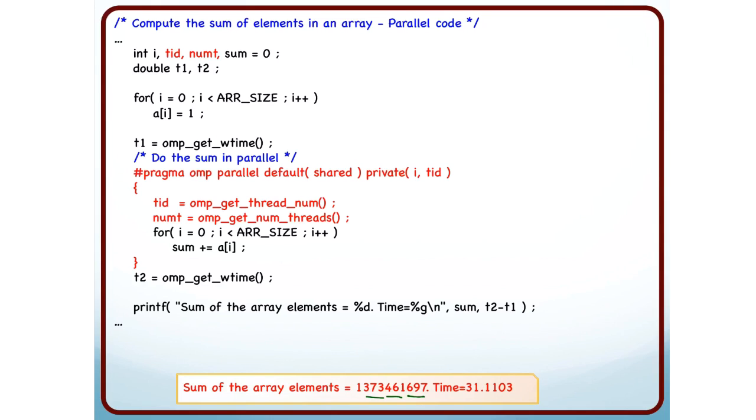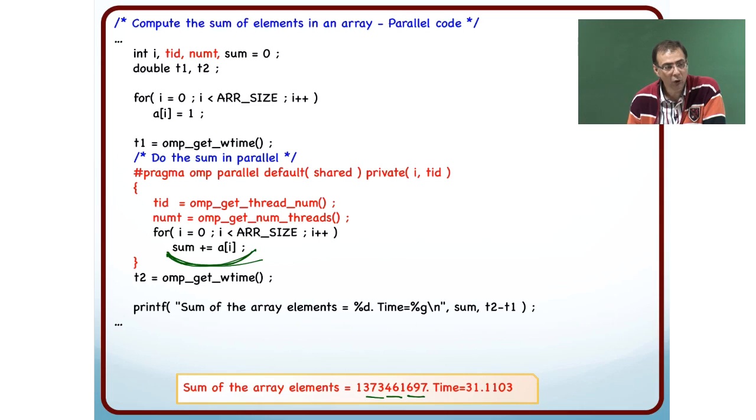And we have already discussed this race condition enough times that there is this variable sum. I am trying to say sum plus equal to A i. Sum is a shared variable.